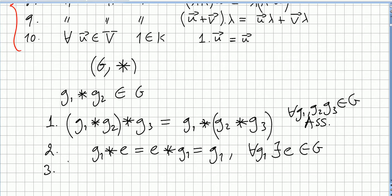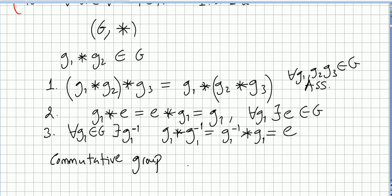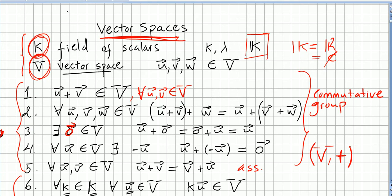And for any element G2 in the group, there must be an inverse element such that G2 star its inverse equals the identity. This is the definition of a group. An abelian group, or commutative group, additionally satisfies: G1 star G2 equals G2 star G1. If this holds, the group is called a commutative group or abelian group.